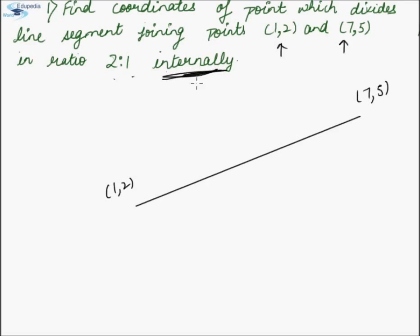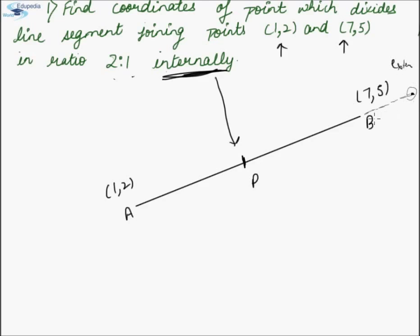The word 'internally' means that the point P which divides this line segment is located on line AB. If it is said that the point divides the line externally, then point P is located on the extended version of AB, that is outside the actual line segment AB, somewhere over here. The point P for such an external case will be collinear with A and B, but located external to AB.